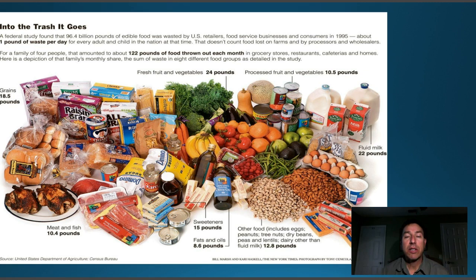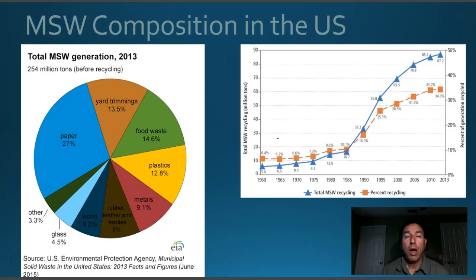Looking at a family of four, about 122 pounds of food is thrown out each month — vegetables at 24 pounds, sugars and sweeteners at 15 pounds, meat and fish at 10.4 pounds. All this wasted food could go to feed other people or be composted, yet instead it sits in landfills, decomposes, and causes problems that we'll discuss later.